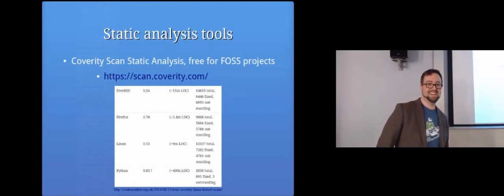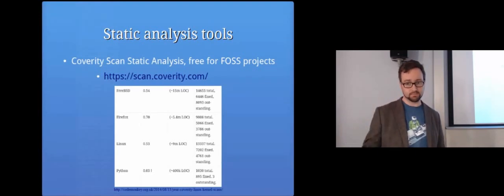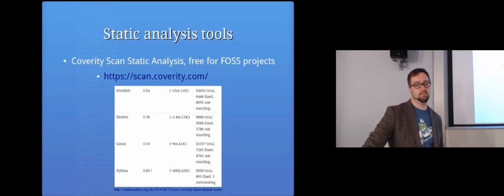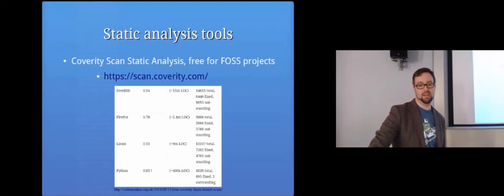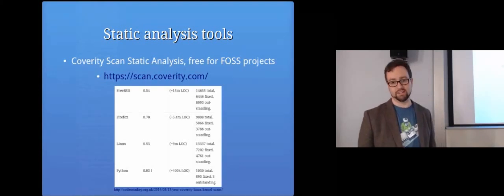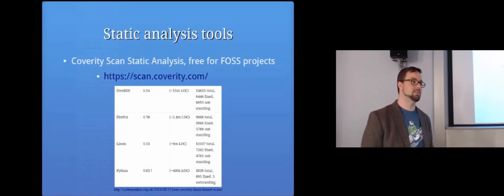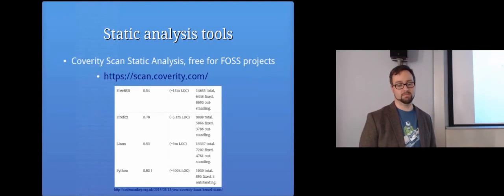Coverity is a big commercial company that does static analysis. You can pay them to analyze your own source code, but it's free to use for open source projects — you can use their online scanner. It's been used for several years to scan many projects, including the Linux kernel. You can see it has detected loads of errors and flaws — apparently 4,761 outstanding issues in the Linux kernel that hadn't been fixed at the time of publication, though not every single one is necessarily a serious security problem.